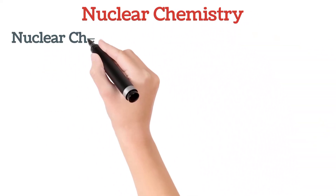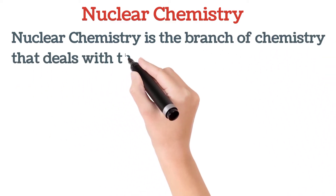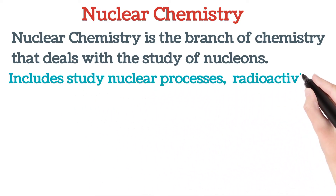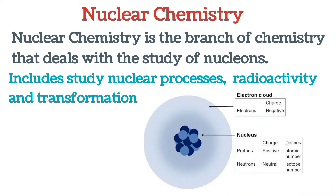In this video we are going to look at nuclear chemistry. Nuclear chemistry is a branch of chemistry that deals with the study of nucleons, and of course it includes studying nuclear processes, radioactivity, and transformation. When we say nucleons, it means the nucleus — so in the nucleus of the atom, as we can see from the diagram, the nucleus contains protons and neutrons.